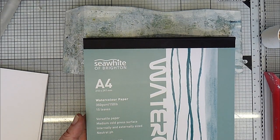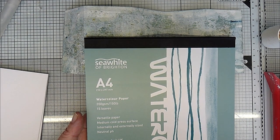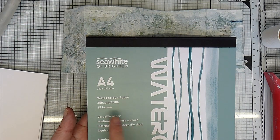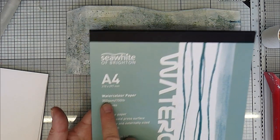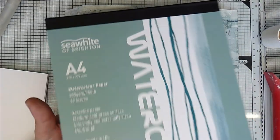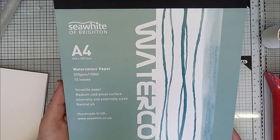I love the, is it Bockingford? Anyway, the other one. And it's wonderful, but it's an arm and a leg. I keep that for very special projects. But this is 350 GSM, 150 pound. And there's 15 sheets. And I think this was about four or five pounds. So, not too bad price-wise.